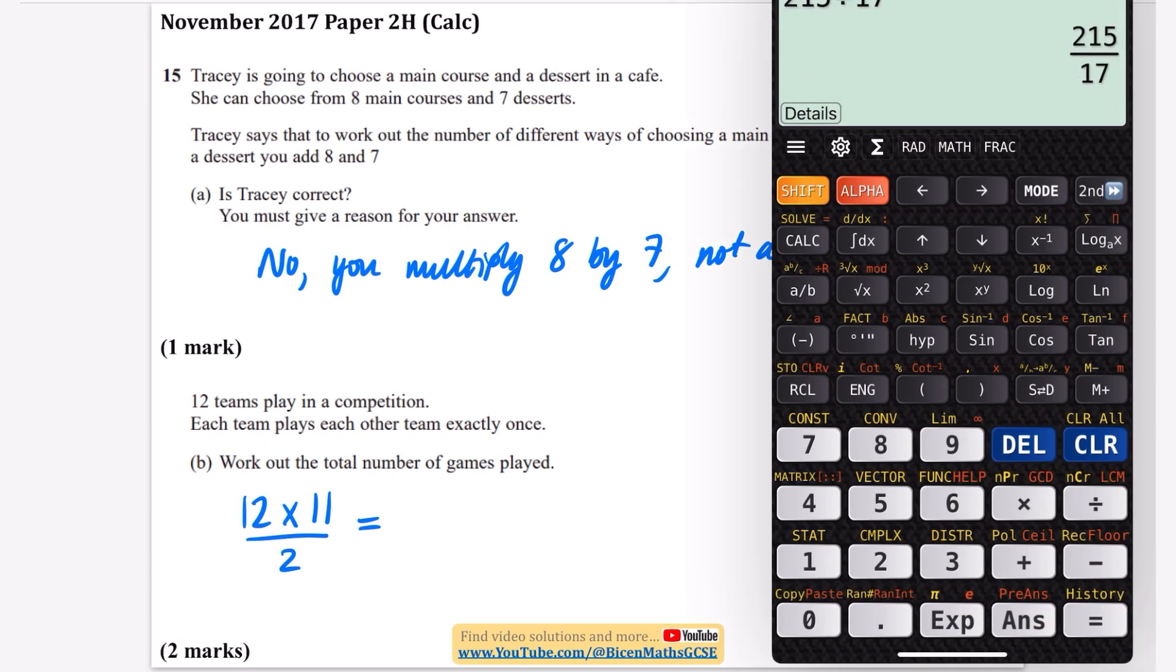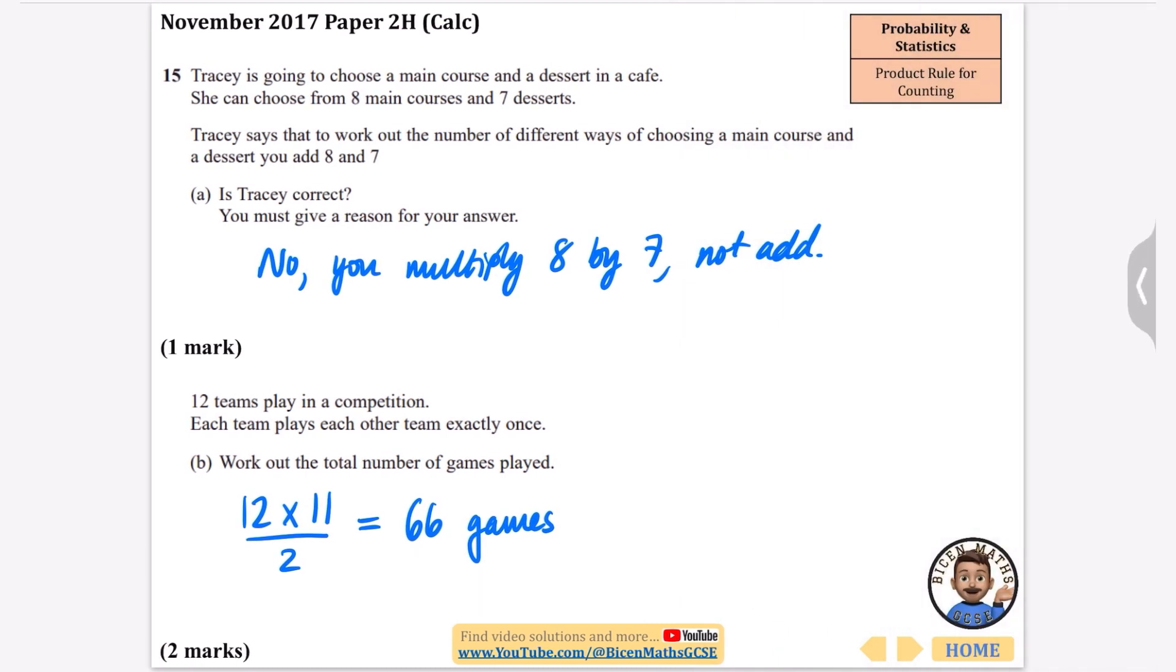Now if you're not sure why that would do doubling, I've got a full playlist on this on my home page. So if you go to my home page and look for the product rule for counting you will see me categorizing these questions into different types. In this particular case there are going to be 66 games because we don't want to double count each team playing. What I mean by double counting is we were counting a versus b, and also b versus a, and they're only playing each other once, which is why we divide by two.